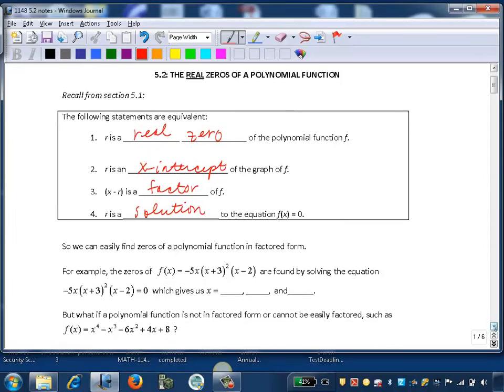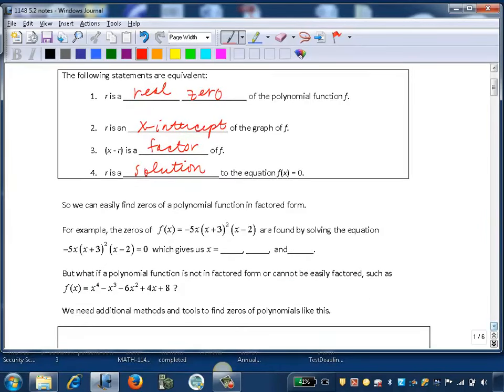So we can easily find zeros of a polynomial function if it's in factored form. For example, if we have f(x) = -5x(x+3)²(x-2), we can find these zeros by setting the function equal to zero. On inspection we can see that x would equal 0, -3, and 2.